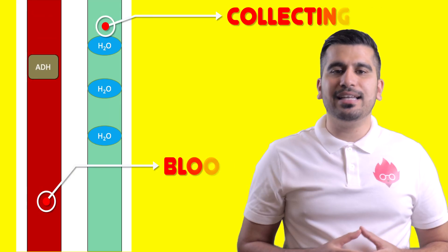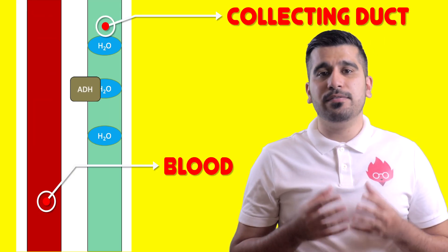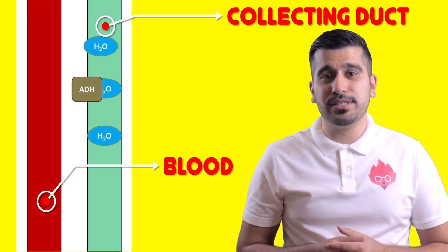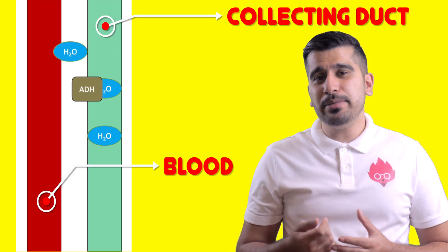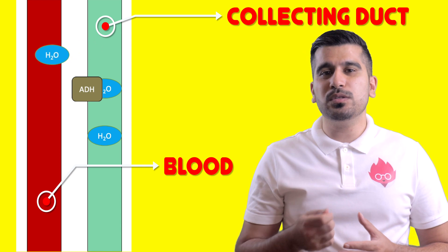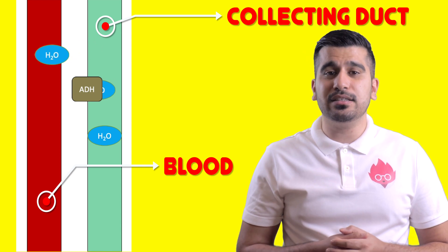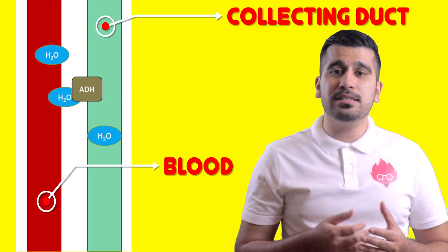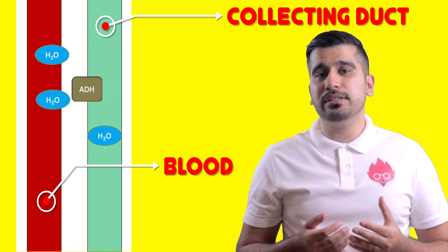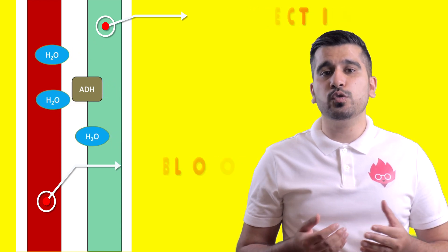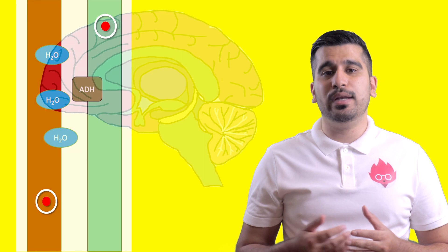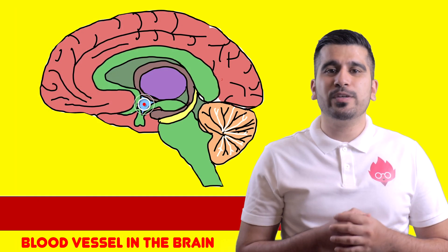Water moves out of the collecting ducts via osmosis. The permeability of the walls of the collecting duct can be altered depending on the need to reabsorb more or less water.